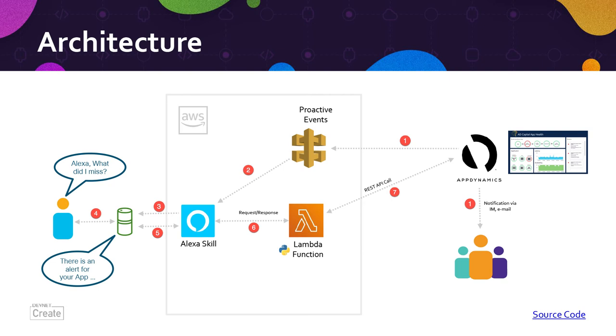You may be asking how this integration was possible. We defined different health rules in AppDynamics, and when any of those health rules are violated, AppDynamics will push a notification to the AWS Proactive Events API. This API will also send a notification to a custom Alexa skill that we developed for this demonstration. The Alexa skill will push the notification to Alexa devices — the Echo Dots that you saw in the video. Users can then hear all those alerts or notifications, and they can open the custom skill to ask for additional information. The custom Alexa skill will trigger a Lambda function written in Python that will make API calls to AppDynamics to gather all needed information and send it back to your device via the Alexa skill.